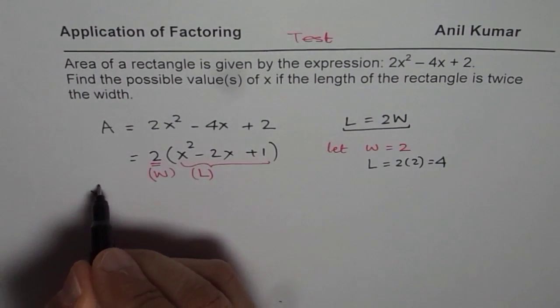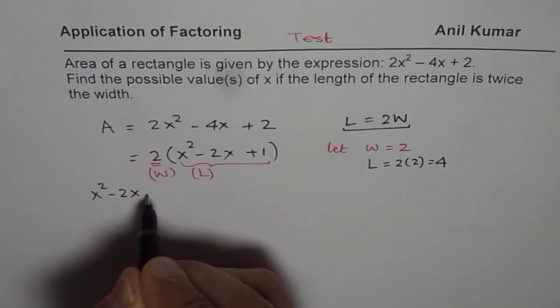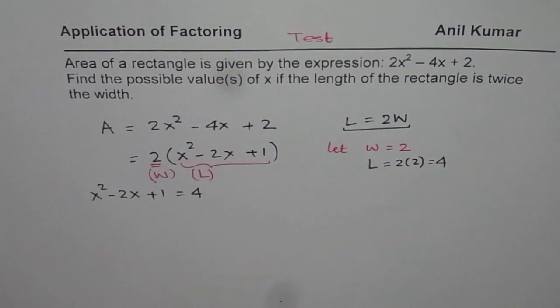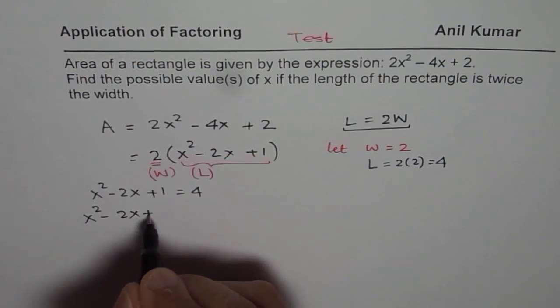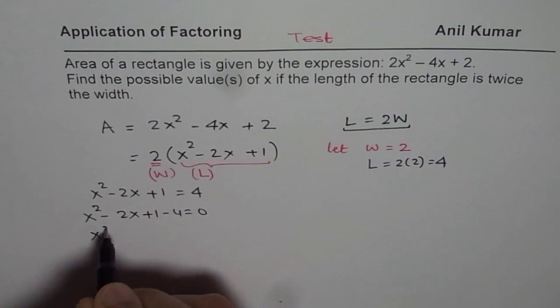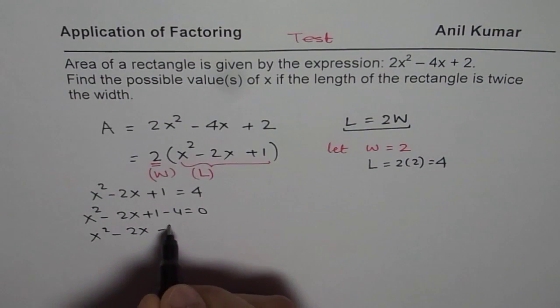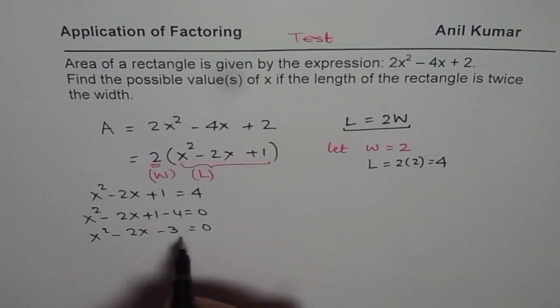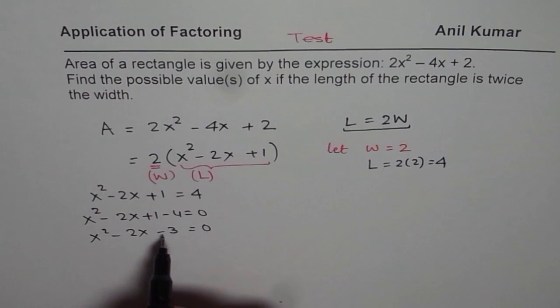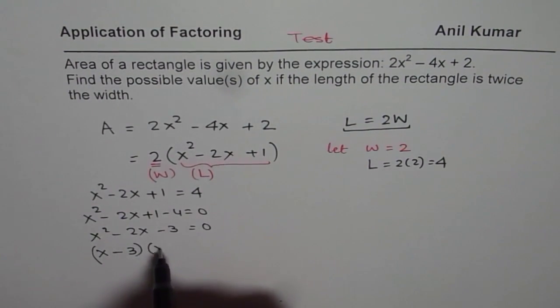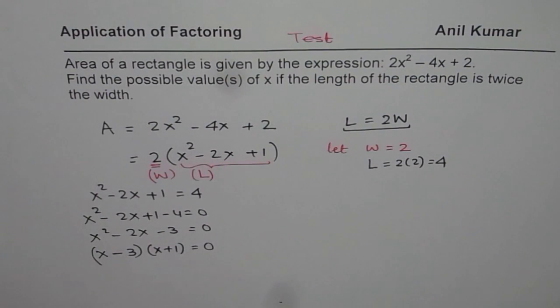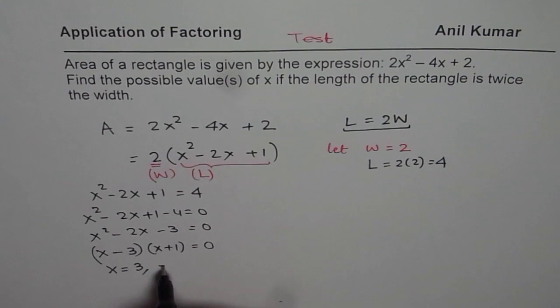That means x²-2x+1 equals to 4. Now we can bring 4 to this side. We have x²-2x+1-4 equals to 0. x²-2x-3 equals to 0. And you can factor. You are looking for a product of -3 sum of -2. So you get x minus, so that is bigger number is negative. So x-3 times x+1 equals to 0. And that gives you two solutions. That is x is equals to either 3 or -1.